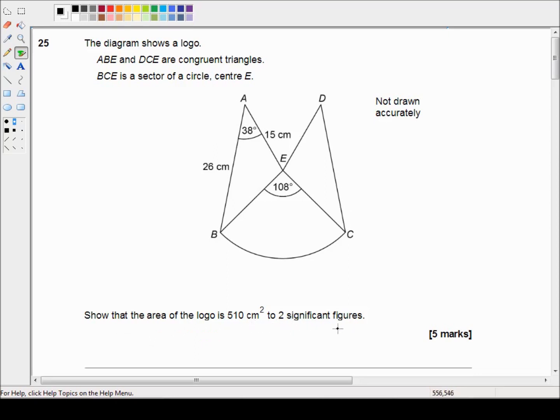Okay, so this five mark question is testing our ability to use the cosine rule, the area of a triangle which is a half AB sine C, and the cosine rule A squared equals B squared plus C squared minus 2BC cos A, and the area of the sector of a circle which is part of our circle theorem. So that's three things in one.